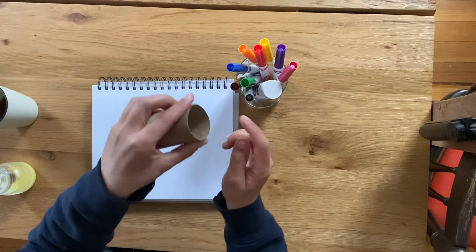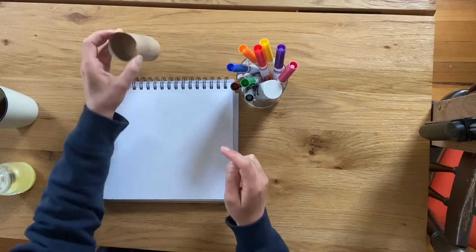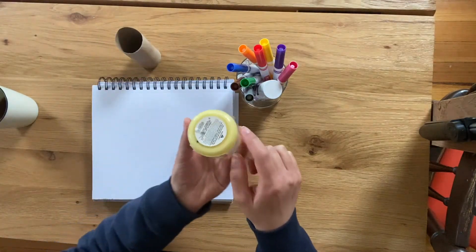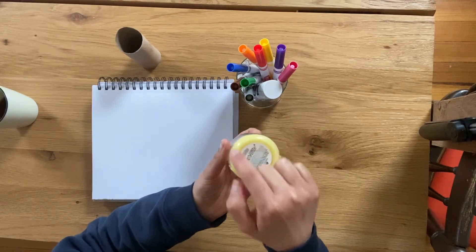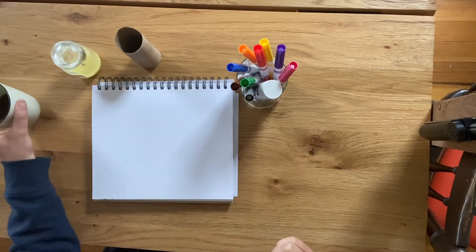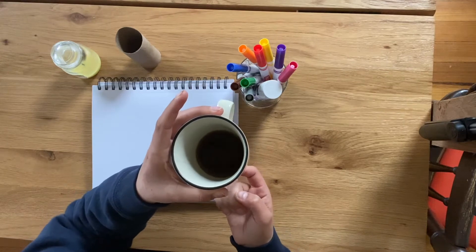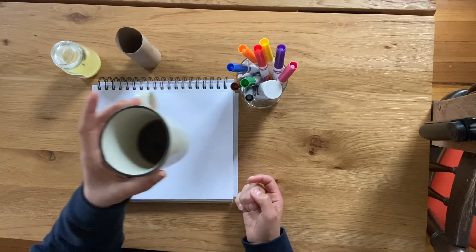You could use a toilet paper roll because it has a circle. You could use the bottom of a candle because it's a circle. You could even use the top or bottom of the coffee cup. I'm not going to flip this one upside down.